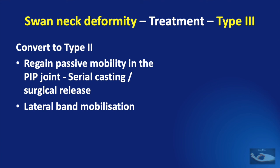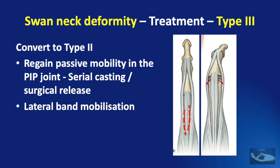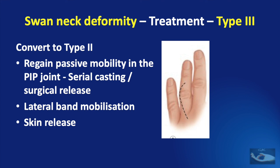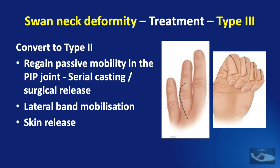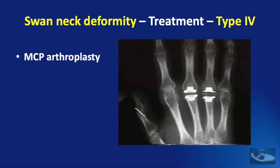The surgical release consists of two important procedures: the lateral band mobilization, in which the spaces between the central slip and the lateral bands are released and the lateral bands are allowed to move volarward so that passive PIP joint flexion becomes possible; and if the skin over the proximal interphalangeal joint is also tight, it is released by an incision, and after flexing the PIP joint, the wound is sutured proximally with the distal end left to heal by secondary intention with adequate splinting.